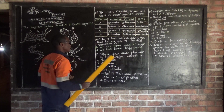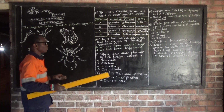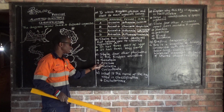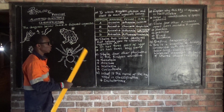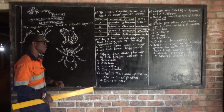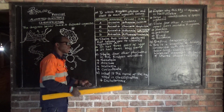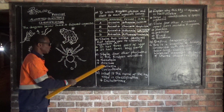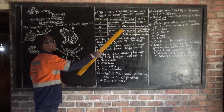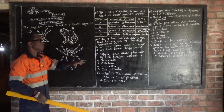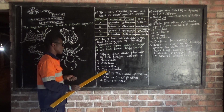Question C says: state four other phyla in the kingdom Animalia. In the Animalia kingdom I've got a lot of phyla. So the four other phyla are: Nematoda, Annelida, Mollusca, and Coelenterata.